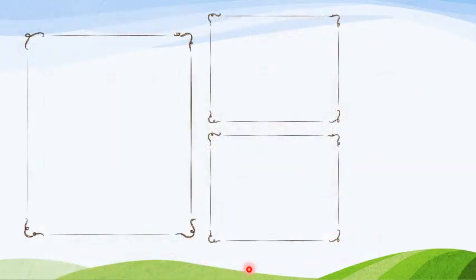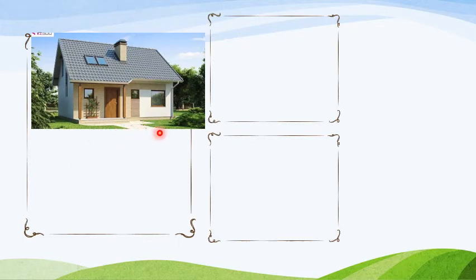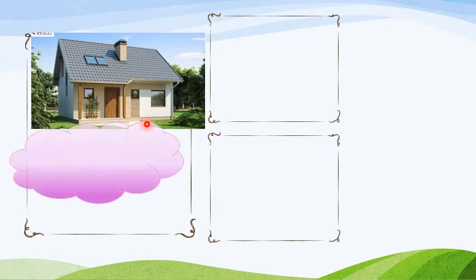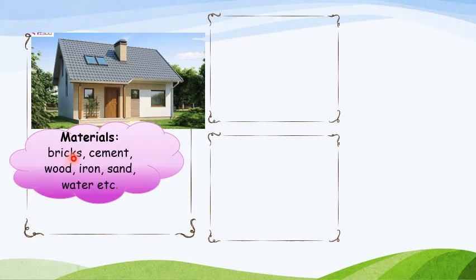Now, children, tell me what you can see here in the picture. A house. Do you know what are the materials required to make a house? Bricks, cement, wood, iron, sand, water, etc. are required for making a house. Very good. For making a house or any kind of building, these are the materials we need.